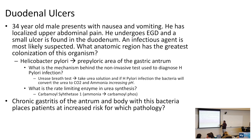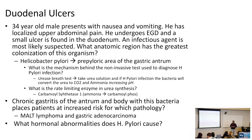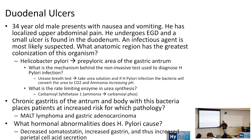Chronic gastritis of the antrum and body caused by H. pylori places patients at increased risk for MALT lymphoma as well as gastric adenocarcinoma. Regarding hormonal abnormalities, H. pylori causes decreased somatostatin and increased gastrin, leading to increased acid production and further damage to the GI system.